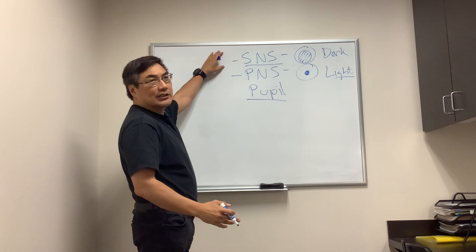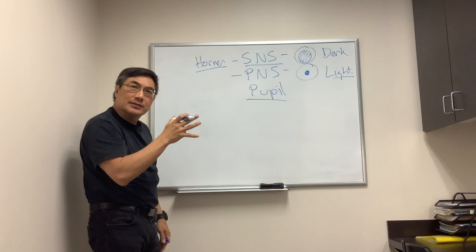A sympathetic lesion is going to be called a Horner syndrome, and that's usually a structural lesion. And so, we image from the hypothalamus all the way down to T2 in the chest.